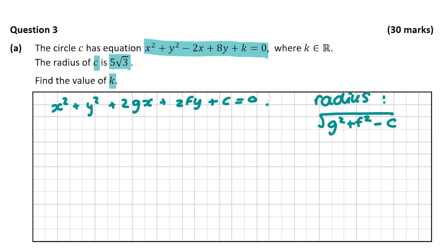Now let's compare this general equation with the equation of our circle. In the general form, 2g is the coefficient of x. The coefficient of x in our circle is minus 2, so g is minus 1. Similarly, 2f is the coefficient of y. The coefficient of y in our circle is 8, so f is equal to 4.